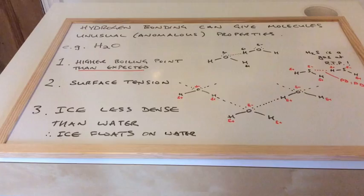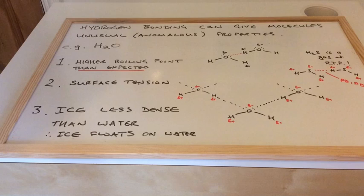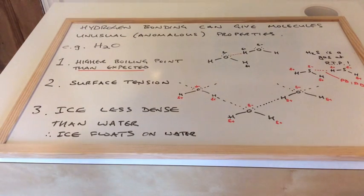The third and final anomalous property of water is that ice is less dense than water. In other words, ice floats on water. That's because when ice forms, the hydrogen bonds, once you get past or below four degrees Celsius, water has actually reached its maximum density. And the hydrogen bonds start to extend.